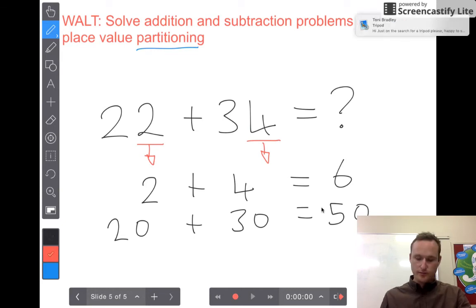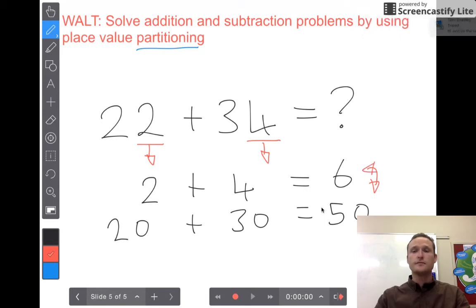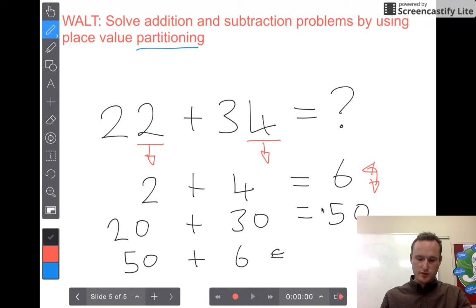Then all you need to do is add these two numbers together. This is a nice quick easy way of solving harder addition problems by breaking them into pieces. 50 plus 6 equals 56.